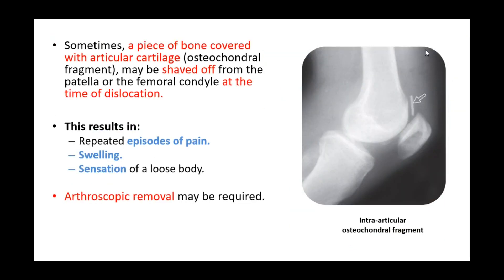Sometimes we see a small chip, which is intra-articular and known as an osteochondral fragment — a piece of bone covered with articular cartilage. This fragment may be shaved off either from the patella or from the femoral condyle at the time of dislocation. If present, it results in repeated episodes of pain, swelling, and the patient gets a sensation of a loose body inside the joint. Once diagnosed, arthroscopic removal is required.